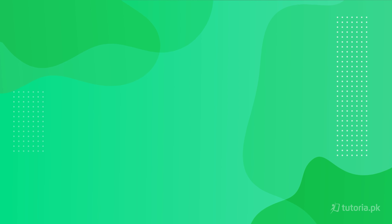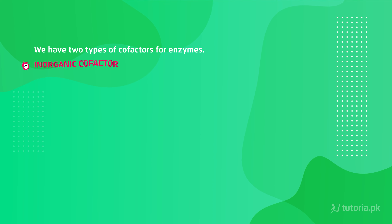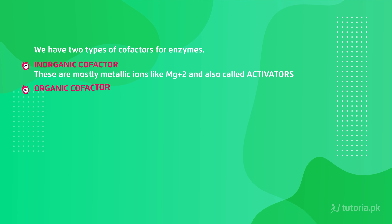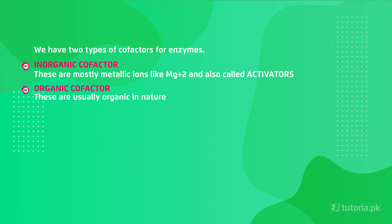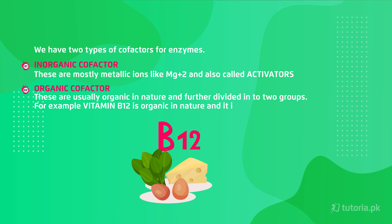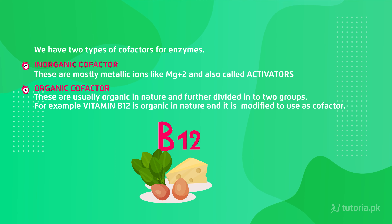We have two types of cofactors. The first is inorganic cofactors — these are mostly metallic ions such as magnesium, and we also call them activators. The second type is organic cofactors, which are organic in nature and we divide them into two groups. For example, vitamin B is organic in nature and it is modified to be used as a cofactor.